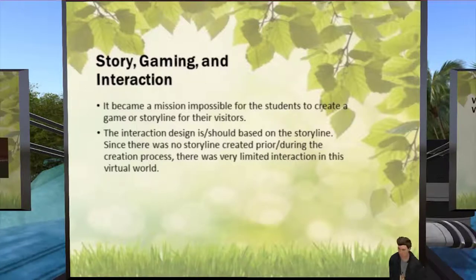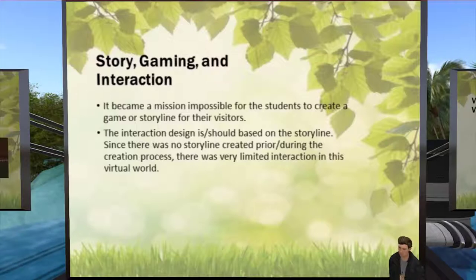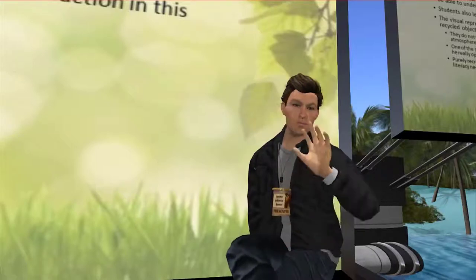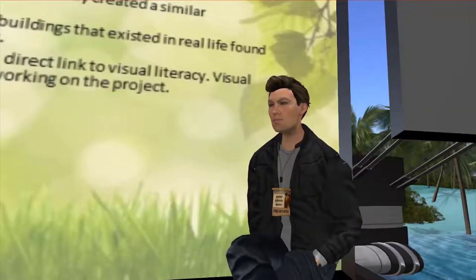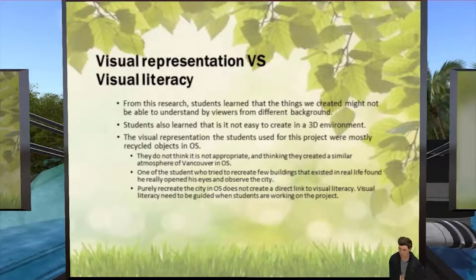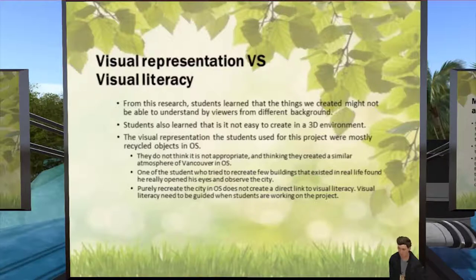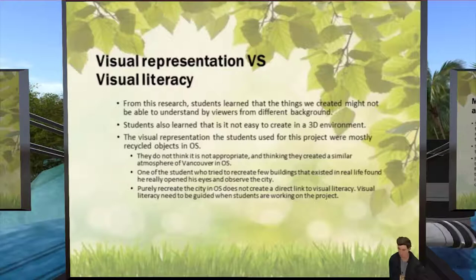Regarding story, gaming, and interaction: students created a Mission Impossible-style game for their story and avatars. Even though many had gaming experience, they were not able to transfer that experience into practice — this research proved the assumption about digital natives wrong again. Interaction design should be based on a storyline, but since no storyline was created prior to the creation process, there was very limited interaction in this virtual world. During the closing discussion, one student said the story of this virtual world is that Vancouver is in foreign investment land — therefore in the virtual world, there is no residence to show the actual feel of the place.